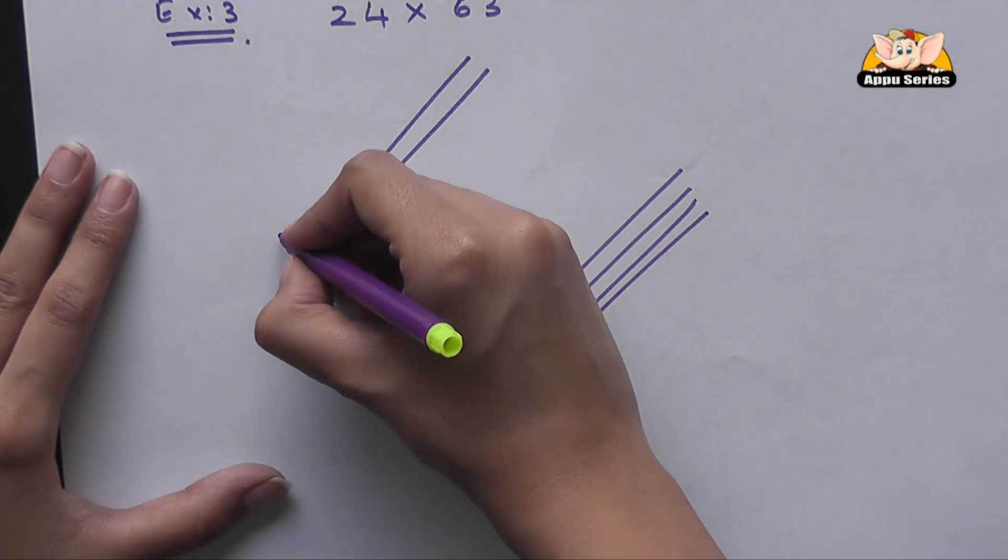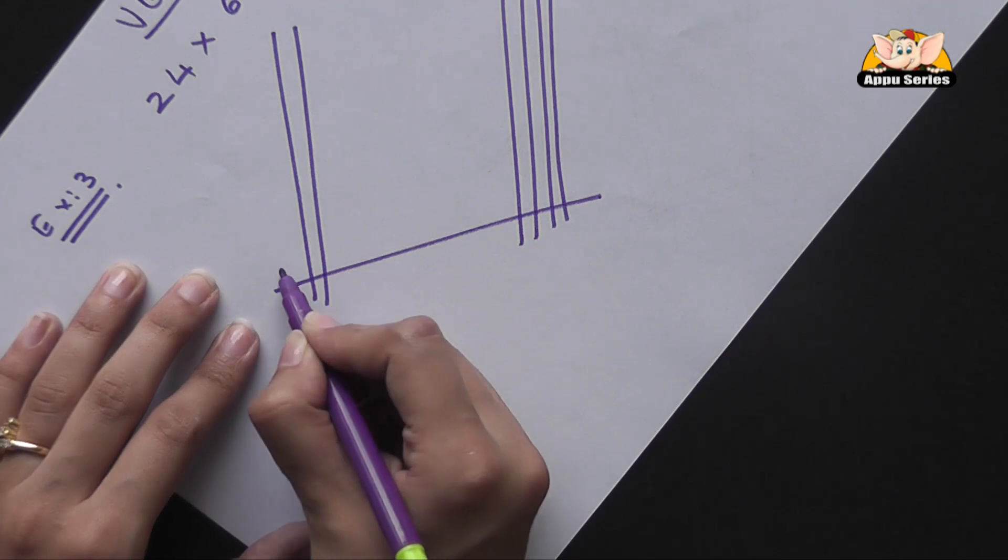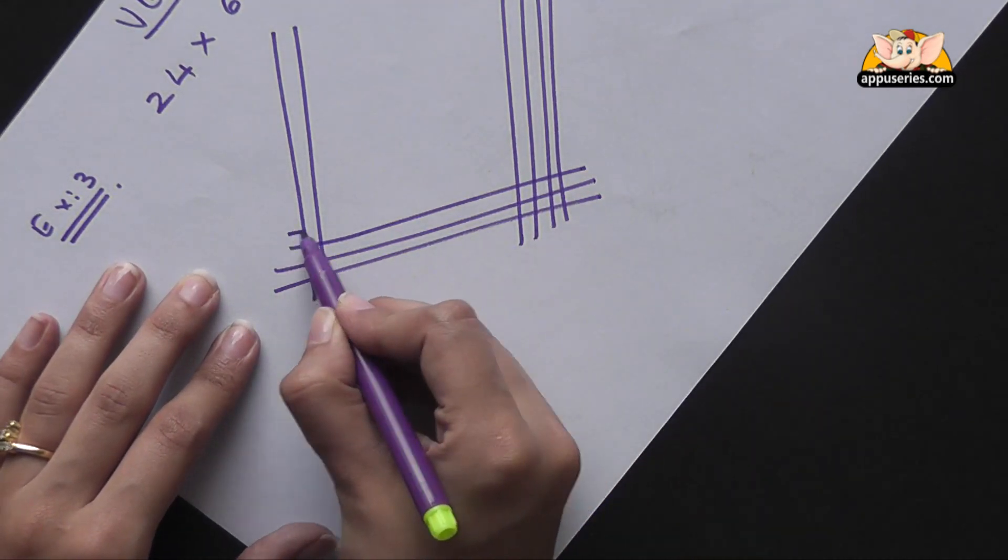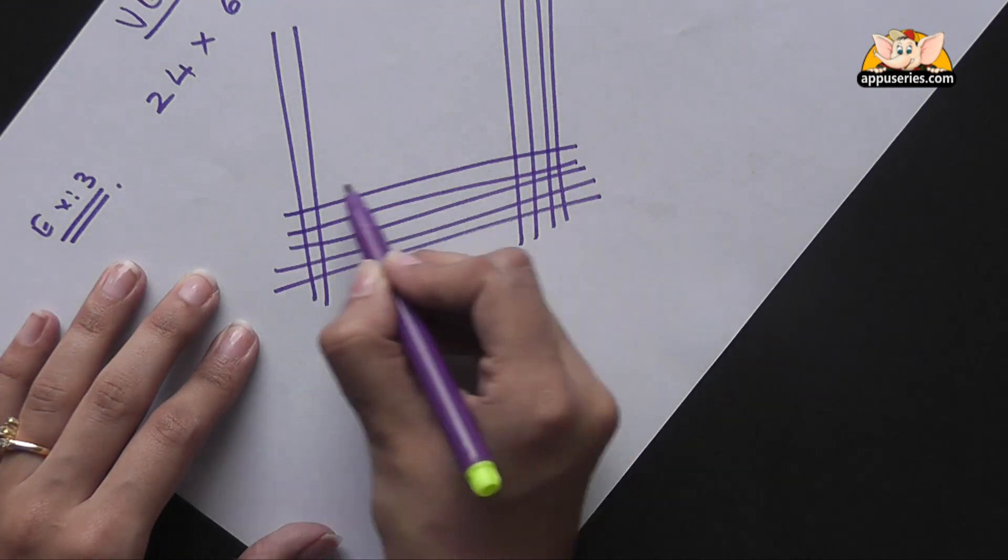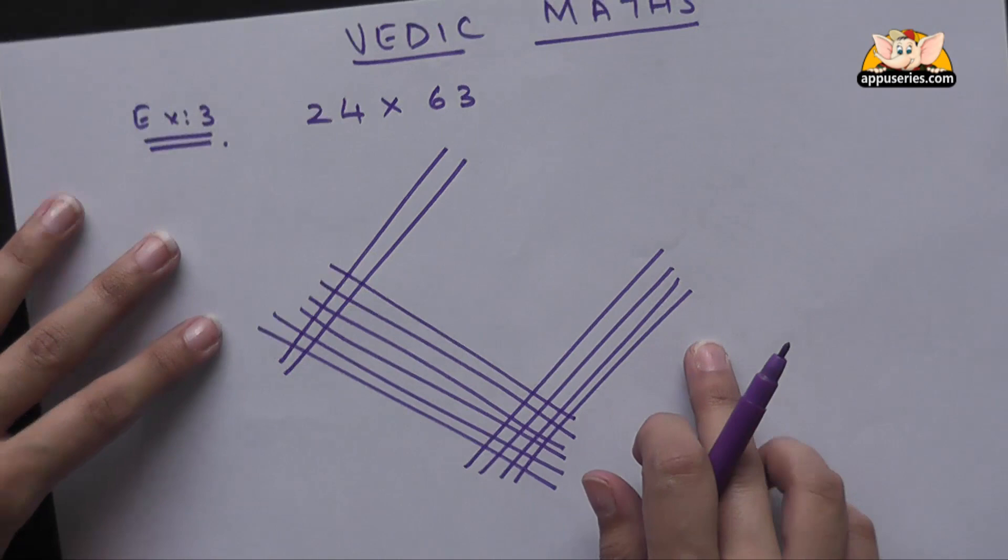Six lines will come this way. And for three, three lines will be drawn here.